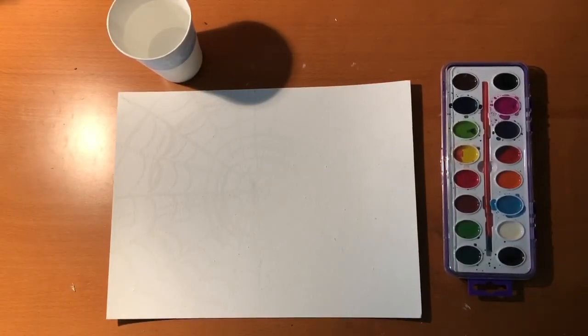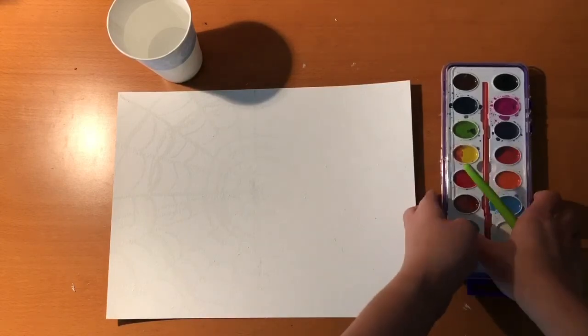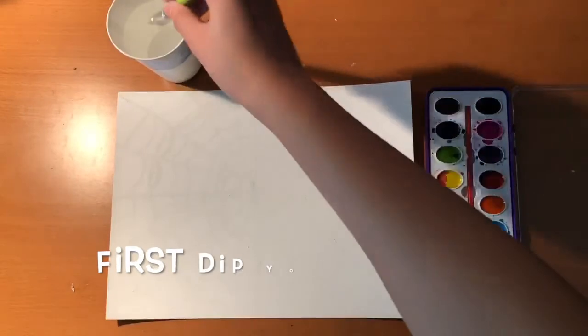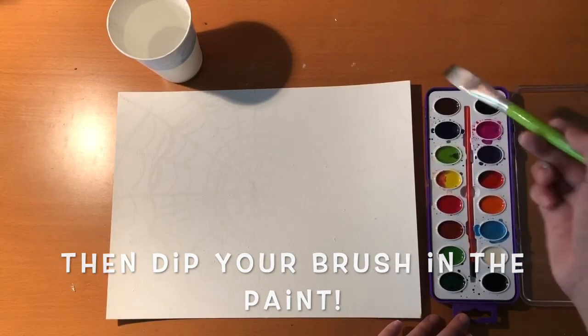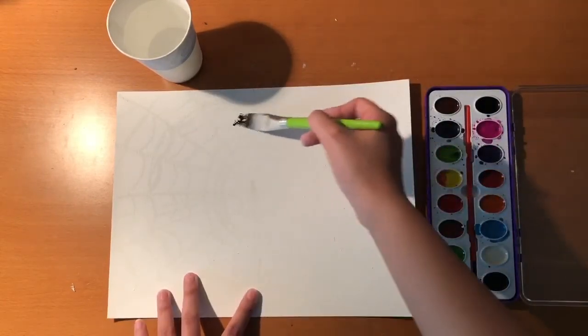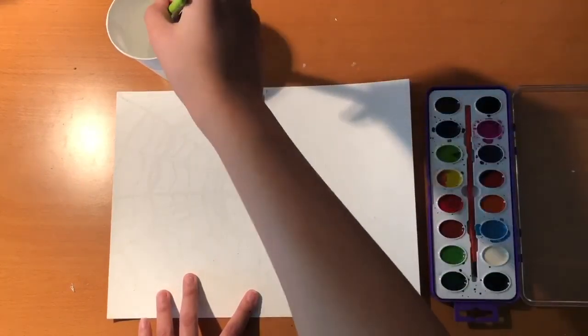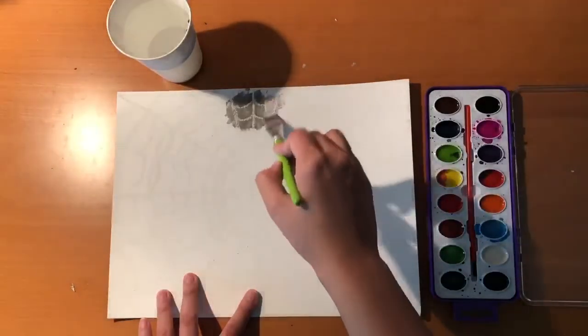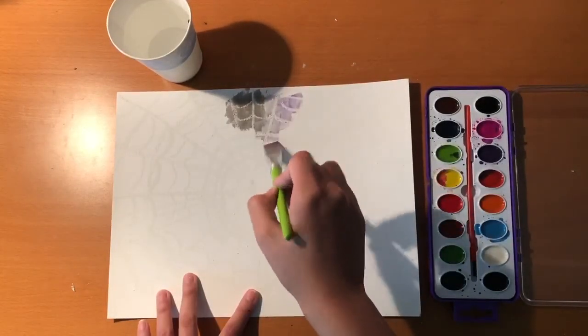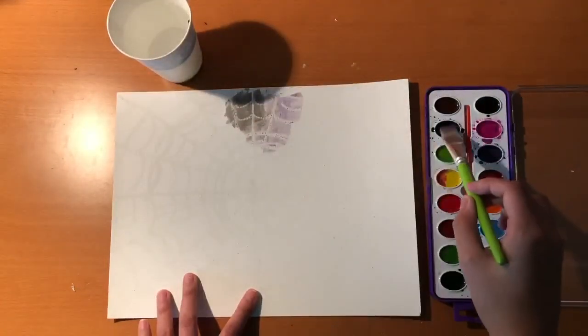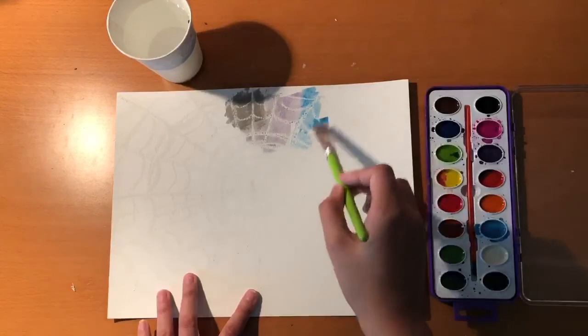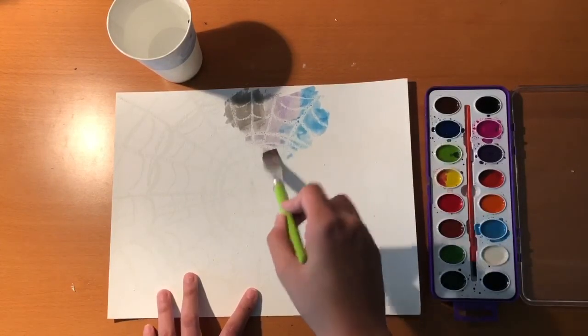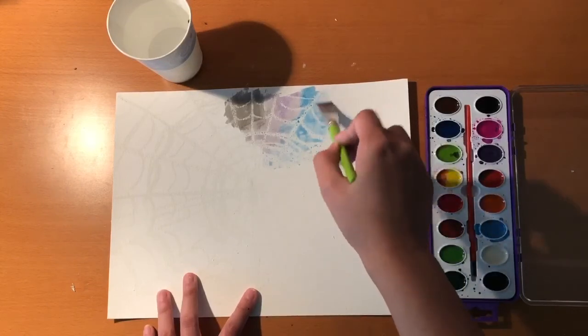Now we are going to paint our spider web. We are going to use black, dark blue, and purple. So, take your watercolors and paint the web with black, purple, and dark blue. As you paint, you will notice that the oil pastel is beginning to show up.